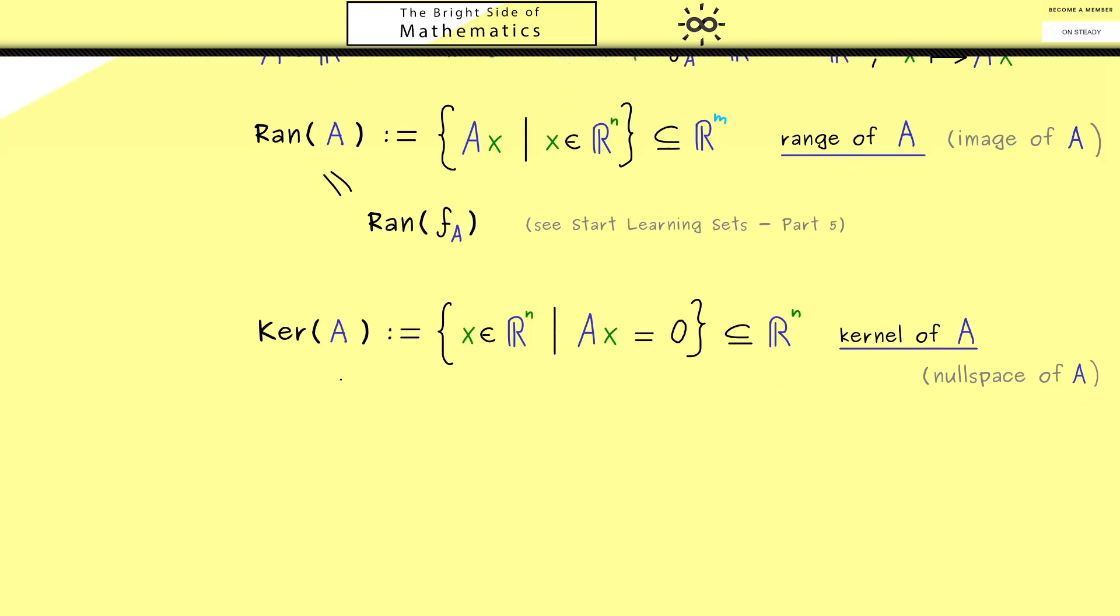To finish the definition here, let's also relate the kernel to what we already know about general maps. As we have already explained, it's the pre-image of a set under the map f_A, and the corresponding set is the singleton that only has the zero vector on the right-hand side inside it. So it's simply the pre-image of the zero vector. It's a special pre-image which will help us in linear algebra. If you don't know pre-images so well, you can also check out my Start Learning Mathematics series.